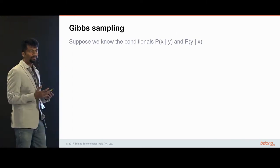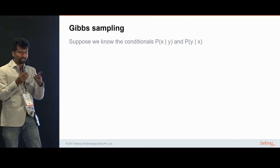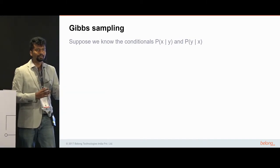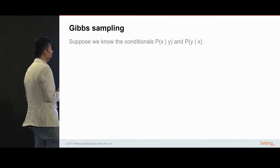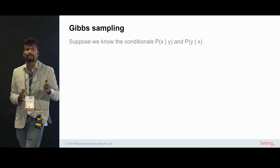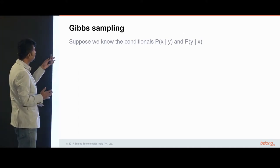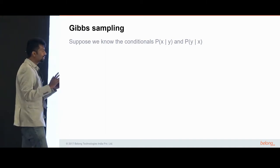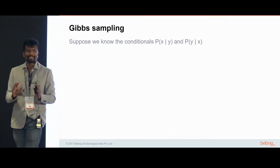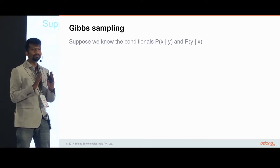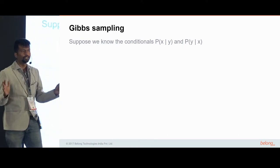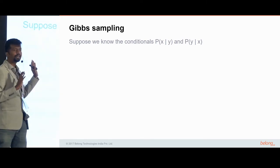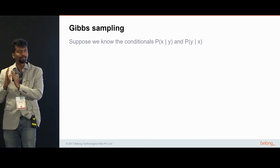Suppose that instead of knowing p(x, y) — which is the joint distribution across both random variables x and y — suppose we know the conditionals: probability of x given y, and probability of y given x. Then we can sample this in an easy manner. You may wonder why computing these conditionals is easier than the joint distribution, but bear with me — in most cases, knowing the conditionals is much, much easier than computing the joint distribution.